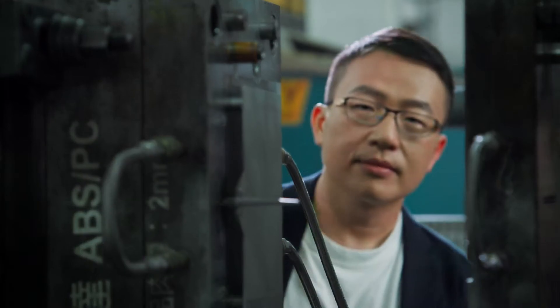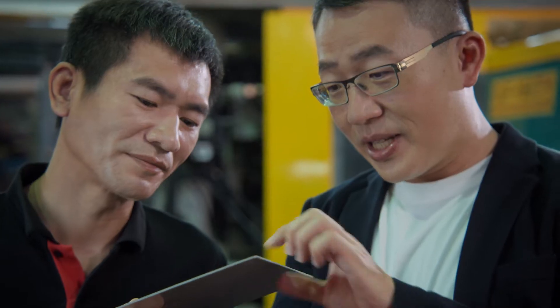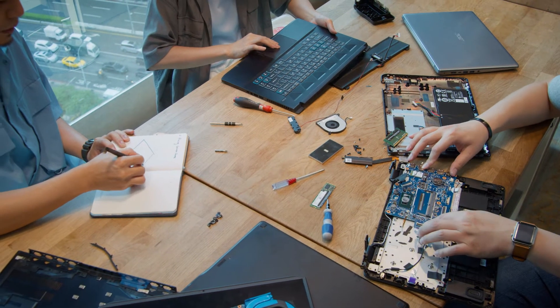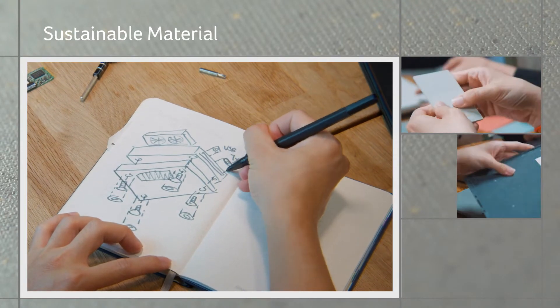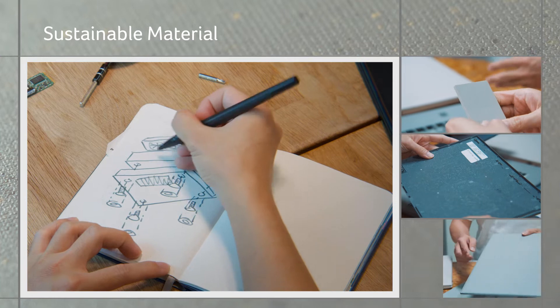One thing we think is also important is visual identity. We have to combine stable material resources, material durability, and aesthetics.